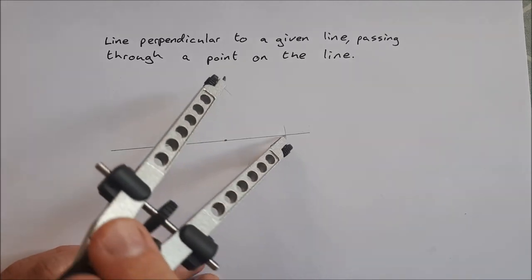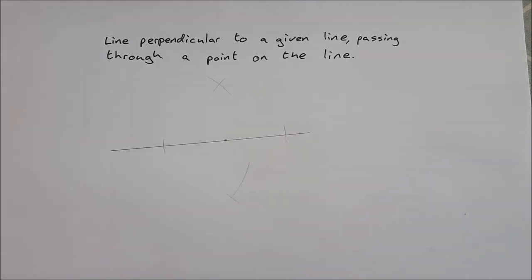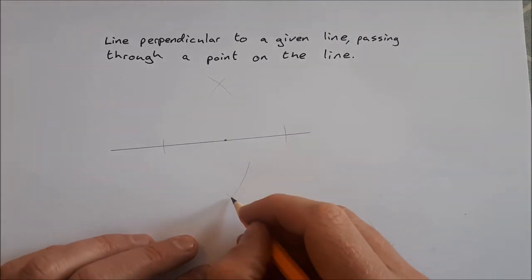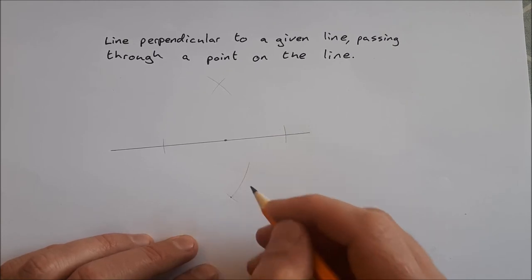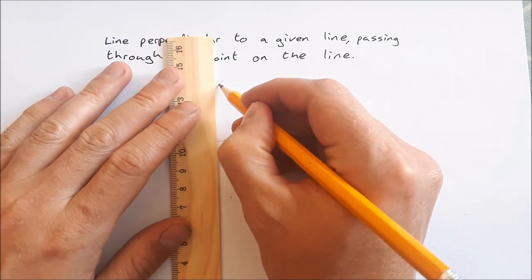Draw an arc above and below the line. This will give you two points of intersection, one below the line and one above the line. Then if you join these two points of intersection,